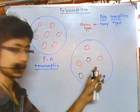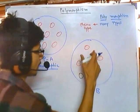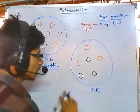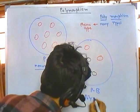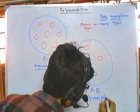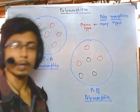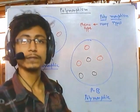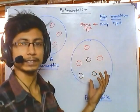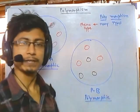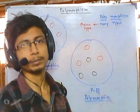Now in population B, we can see two different types of phenotypic expression — one red, one black. So for this reason, we can say this type of population is a polymorphic population. When two or more than two different characteristics are shown inside a population, it is polymorphic. If we get more than two different characteristics, we will also call it a polymorphic population.